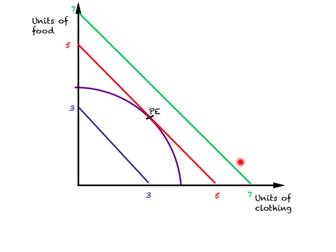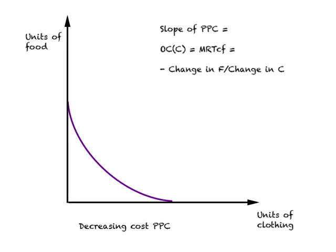To show that the production equilibrium point — the point of tangency between the budget line and the PPC — represents the highest level of income the country can generate: consider the green line defined at 7-7, which implies higher real income than the red line, but given the available production possibilities, a line like 7-7 is simply not attainable. Looking at the blue line at 3-3, this is attainable, but it implies a lower level of real income. In this way, the budget line tangent to the PPC represents the highest possible income that can be generated within this country.